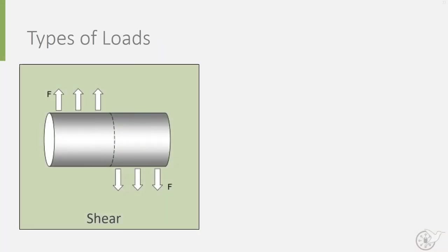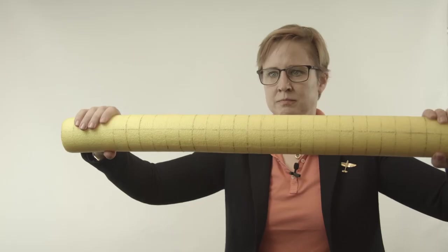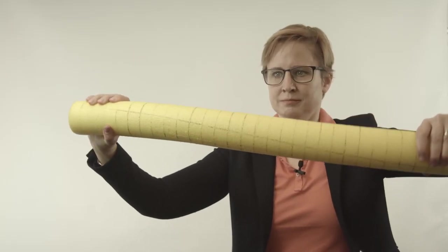That leaves us with two types of loading remaining, shear and torsion. Shear is a transversal force acting perpendicular to the longitudinal axis of a beam, or in our case a spring. Finally, there is torsion, in which the structure is twisted along its longitudinal axis.